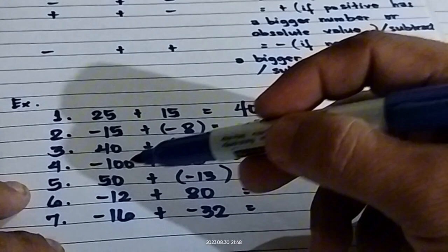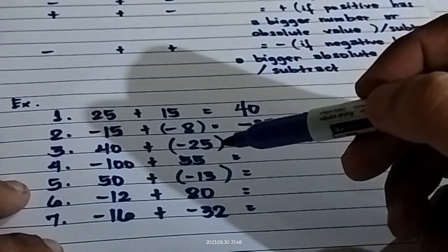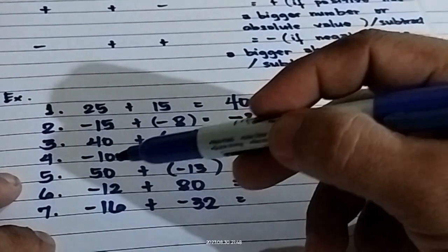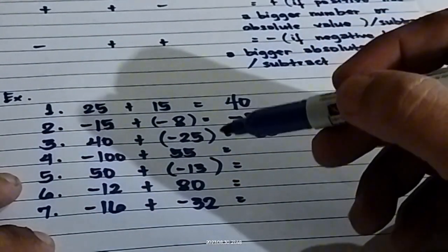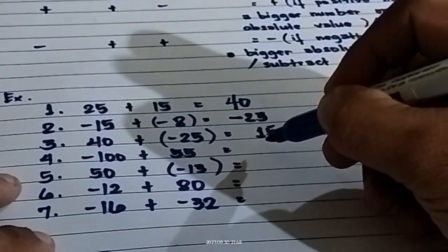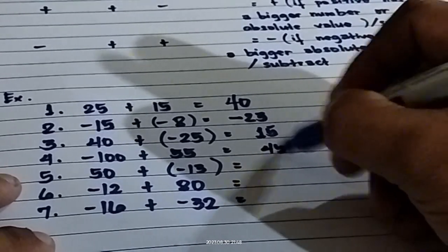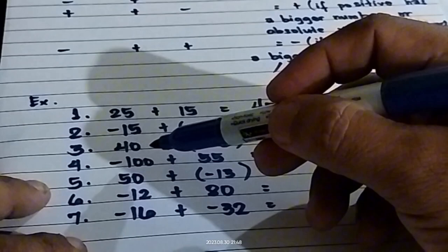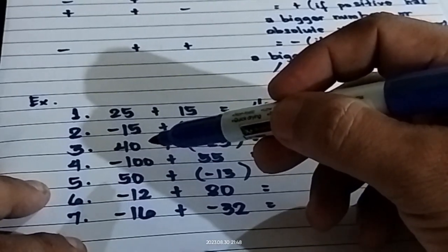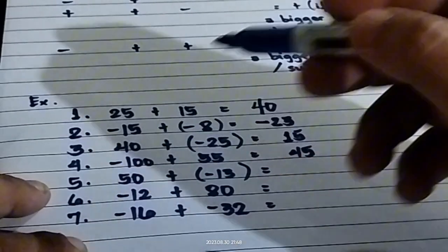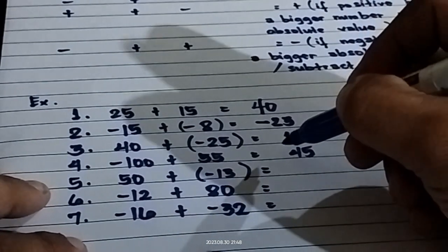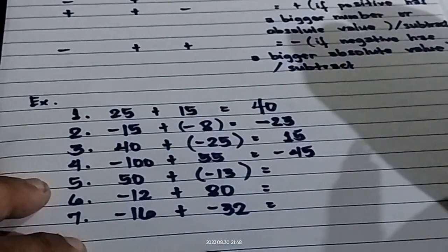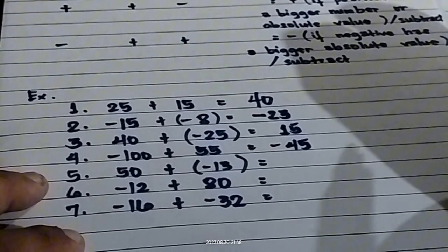Number four: negative 100 plus 55. They are unlike signs, so you're going to subtract: 100 minus 55, which equals 45. Negative 100 has the bigger absolute value, so you're going to copy the sign of negative 100. Therefore, the answer is negative 45.